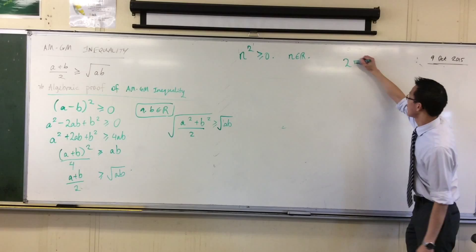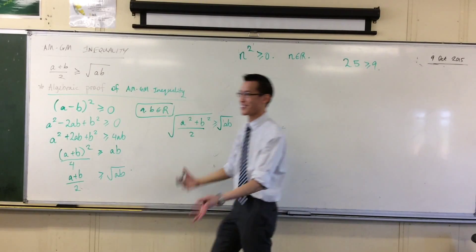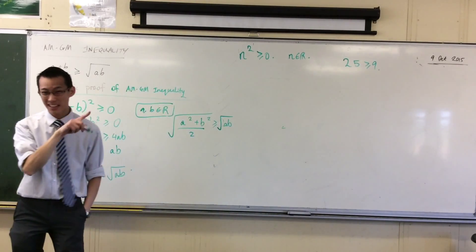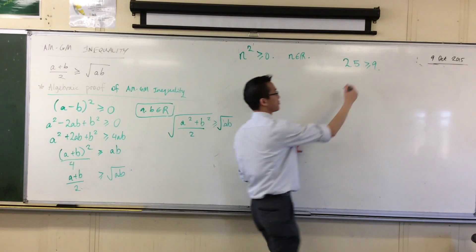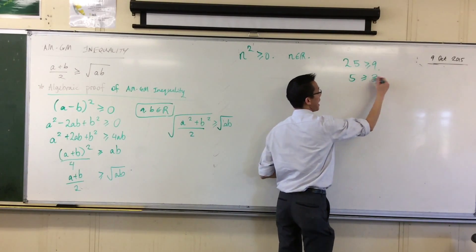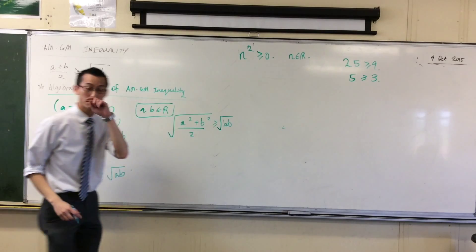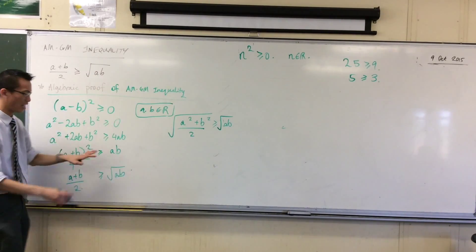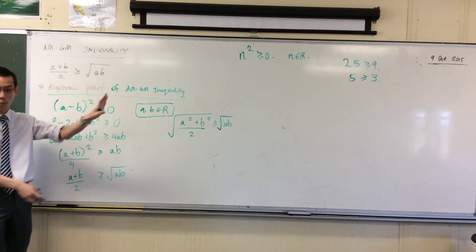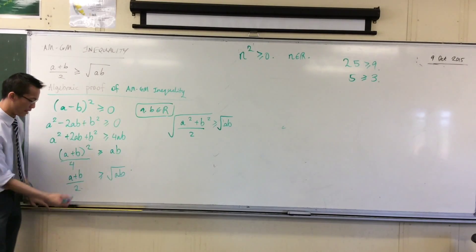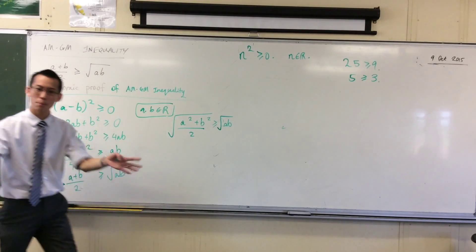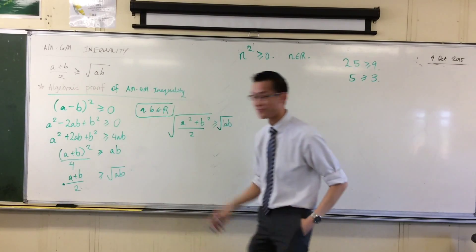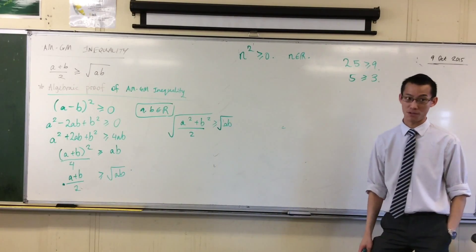If I say 25 is greater than or equal to 9, at least it was last I checked, I can take the square root of both sides, and it's still true. It's all good. So being that that's the case, I can apply a similar kind of logic here. I'll prove it more formally a bit later on, but it's all I need to demonstrate, with no appeal to geometry or anything like that, there's our familiar old AM-GM inequality. Thank you.